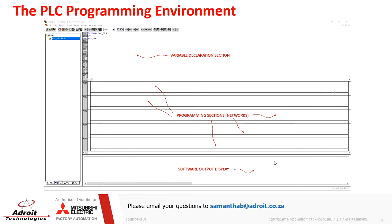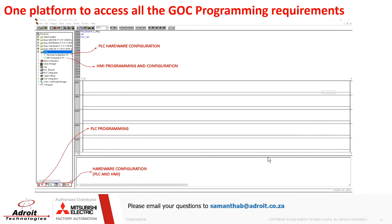Below the programming area is the software output display, which shows the status of your programming process or controller as well as the condition of your program in terms of errors and warnings — this is a prerequisite feature. One of the key strengths of the GOC Toolkit is that you use one platform to configure all hardware components: PLC configuration, PLC programming, HMI configuration, HMI programming, and the integration of these two functions with each other.